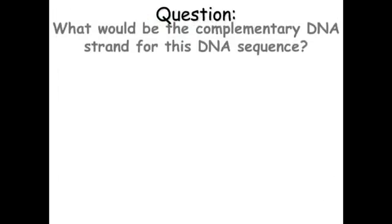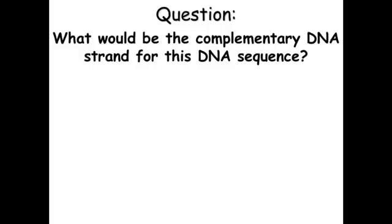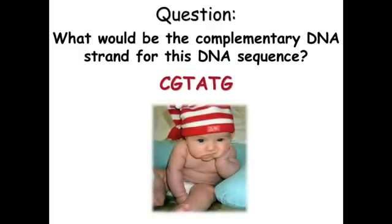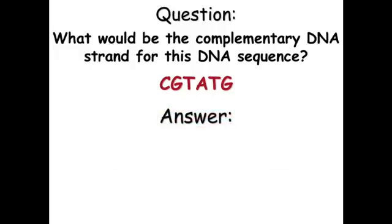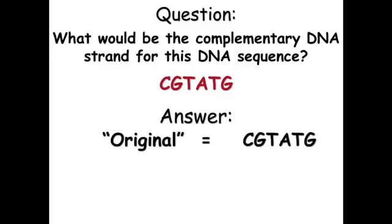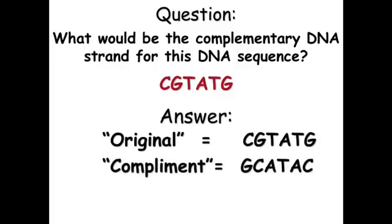One final question: if we know one DNA strand sequence, we should be able to figure out what the complementary strand is. If we start with CGTATG, the complementary strand is GCATAC — C pairs with G, G with C, A with T, T with A, A with T, C with G. Once you know those simple base pairing rules, problems like this are really no problem at all.